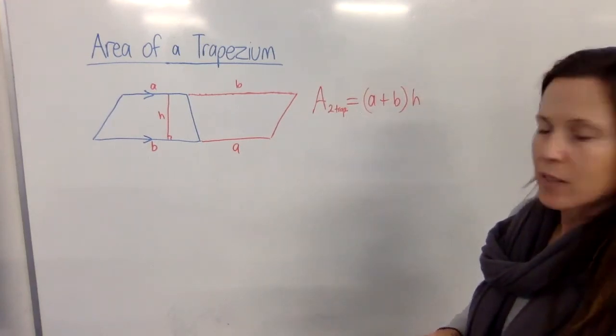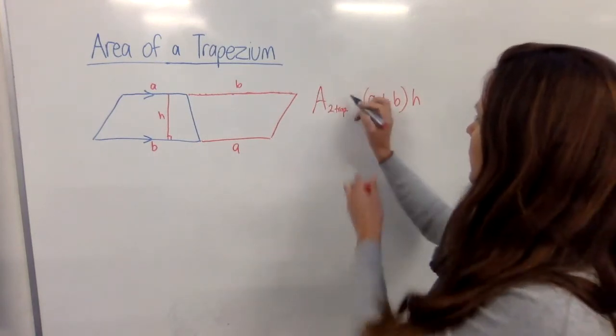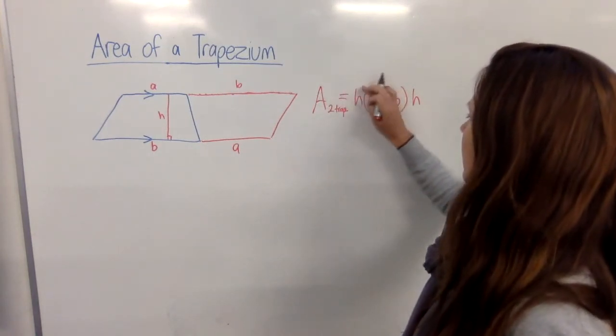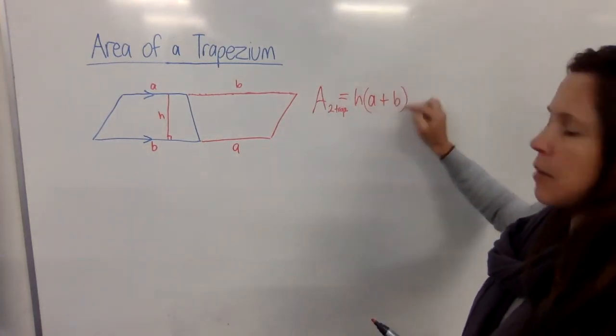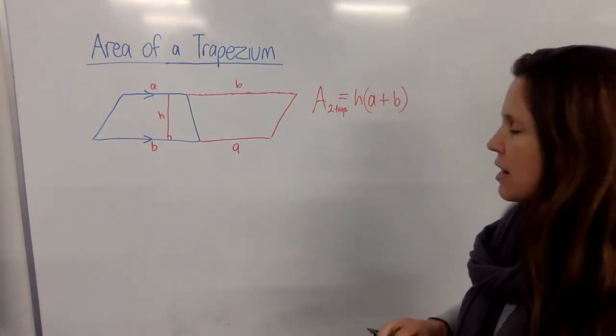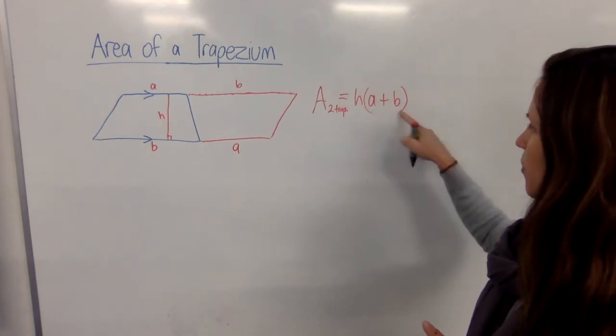Now when we've looked at algebra before, we've found that it's rather tidier to write our height at the front, simply because when we're multiplying one thing by some other things in brackets, sort of just looks neater out there. So you can see we've got the base times the height.